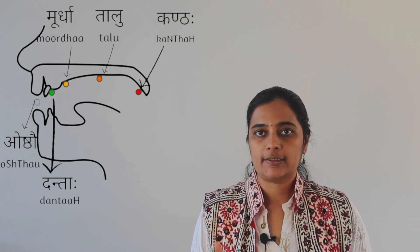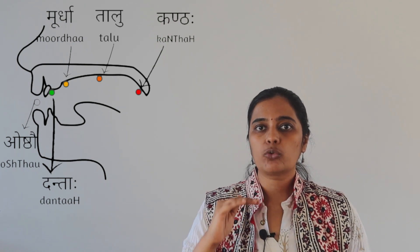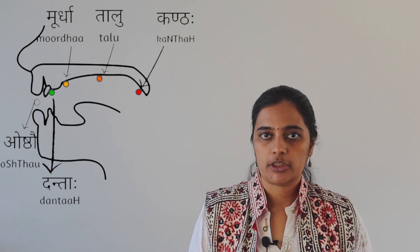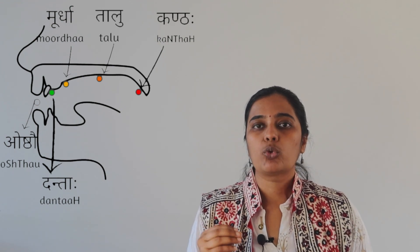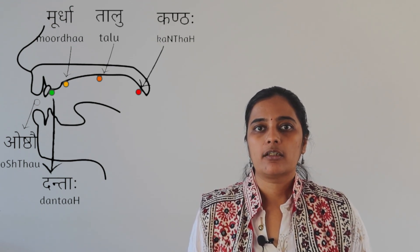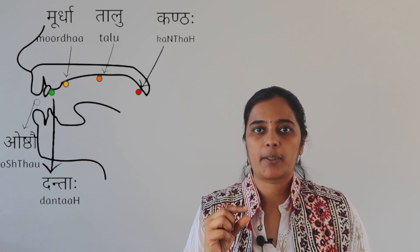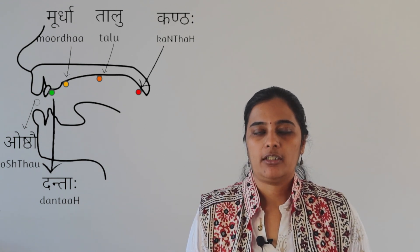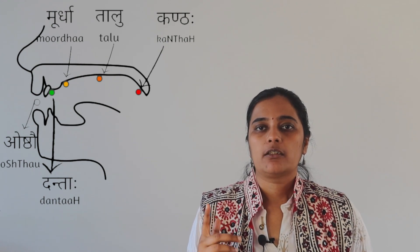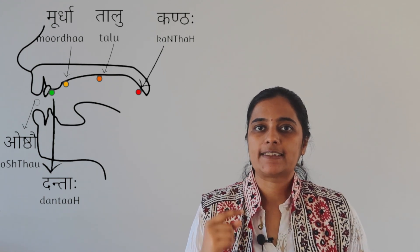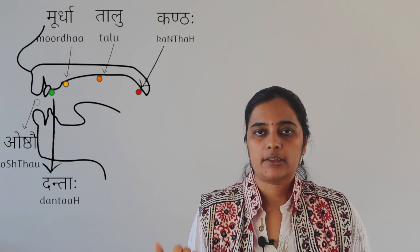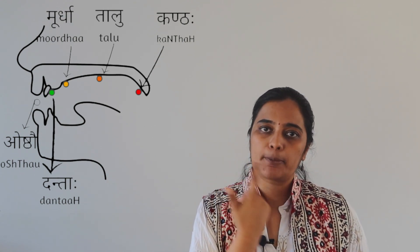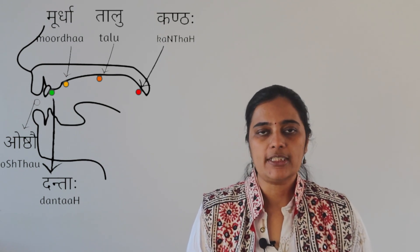The next portion is Talu, which is the hard palate, indicated by the orange colored dot in this picture. And the next is Murdha, which is the roof of the tongue, coming a little further than the Talu. The fourth is Dantaha — that is the teeth. And the last part shown in this picture is the Oshthav, which is the lips. The lips are called Oshthav in Sanskrit.